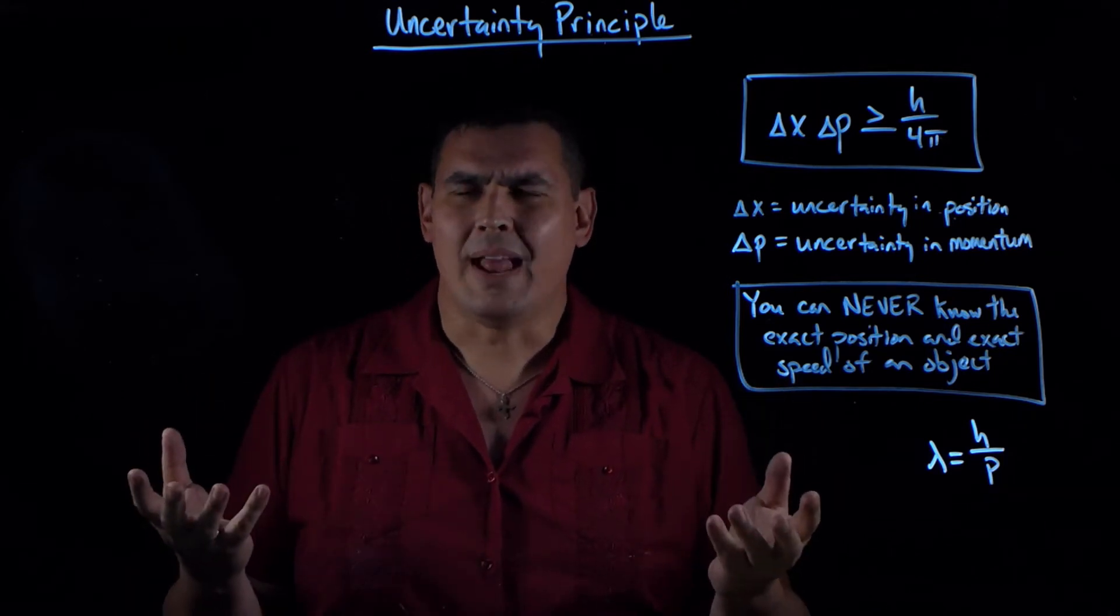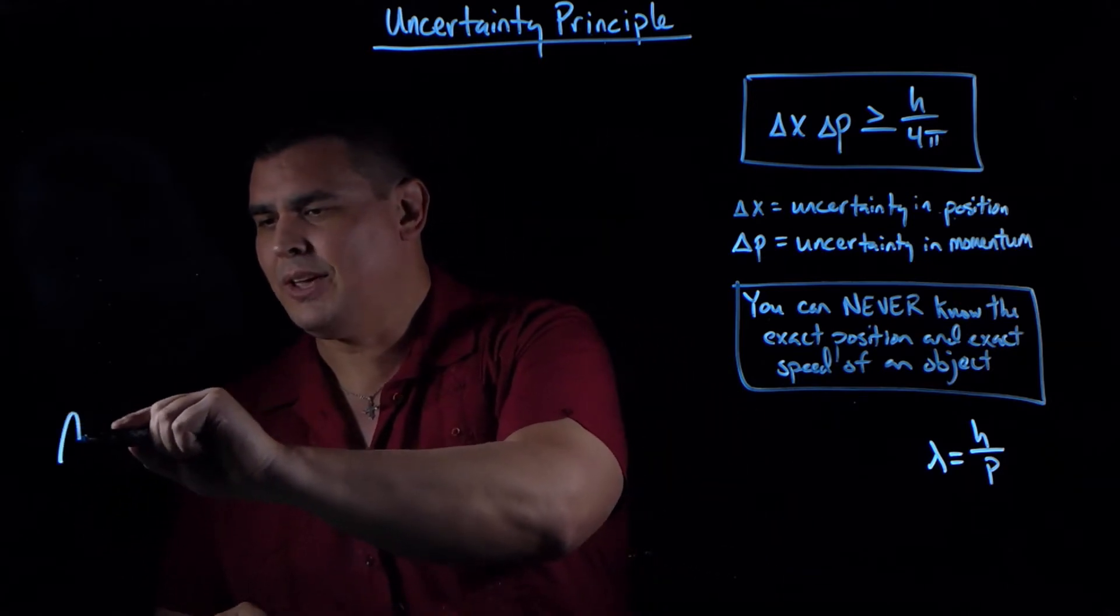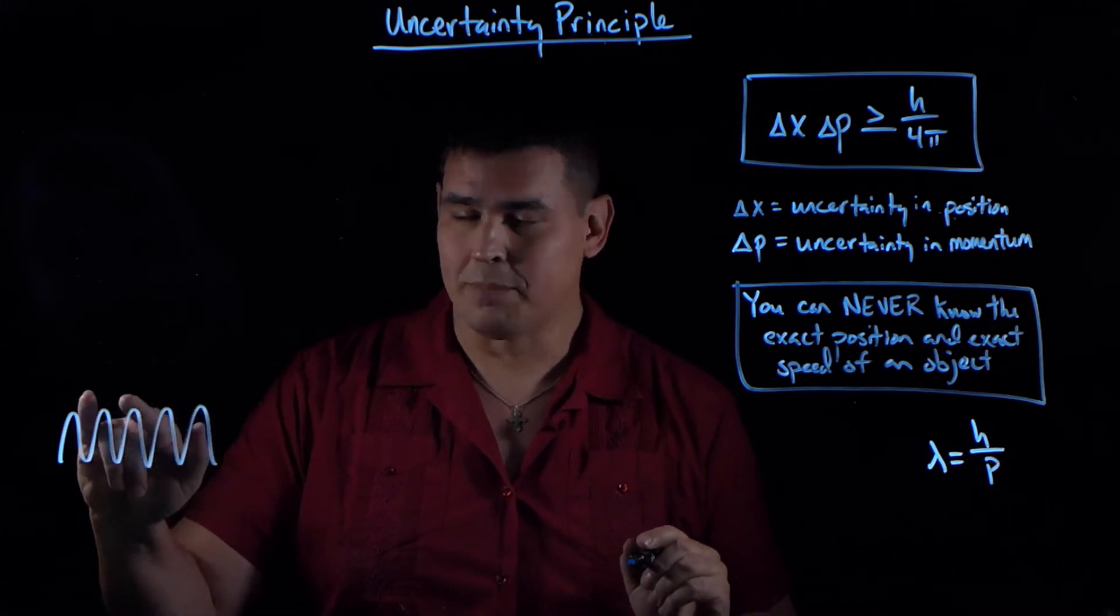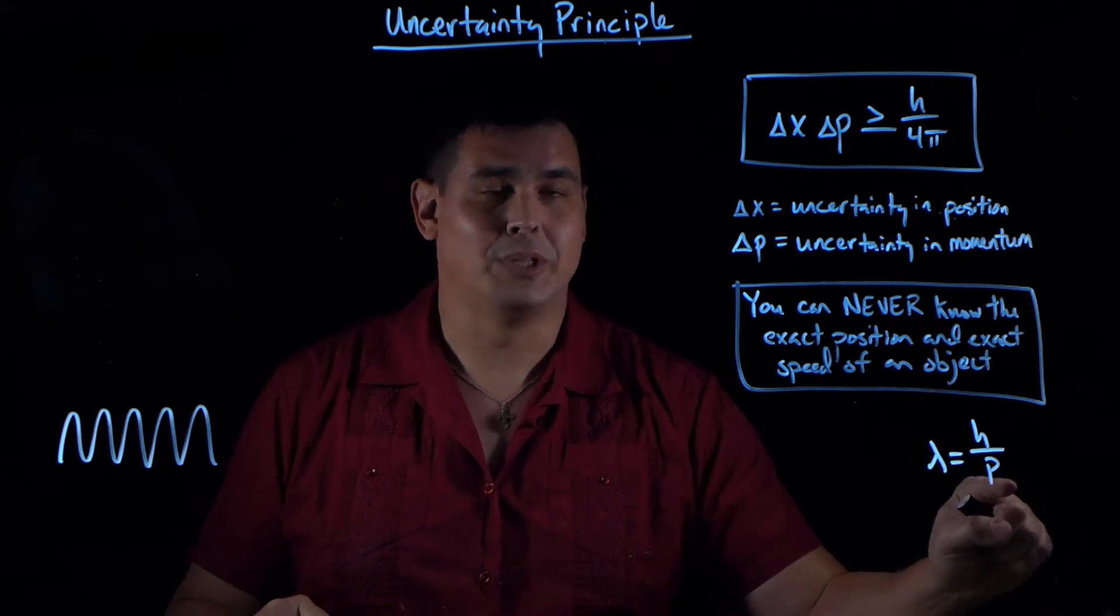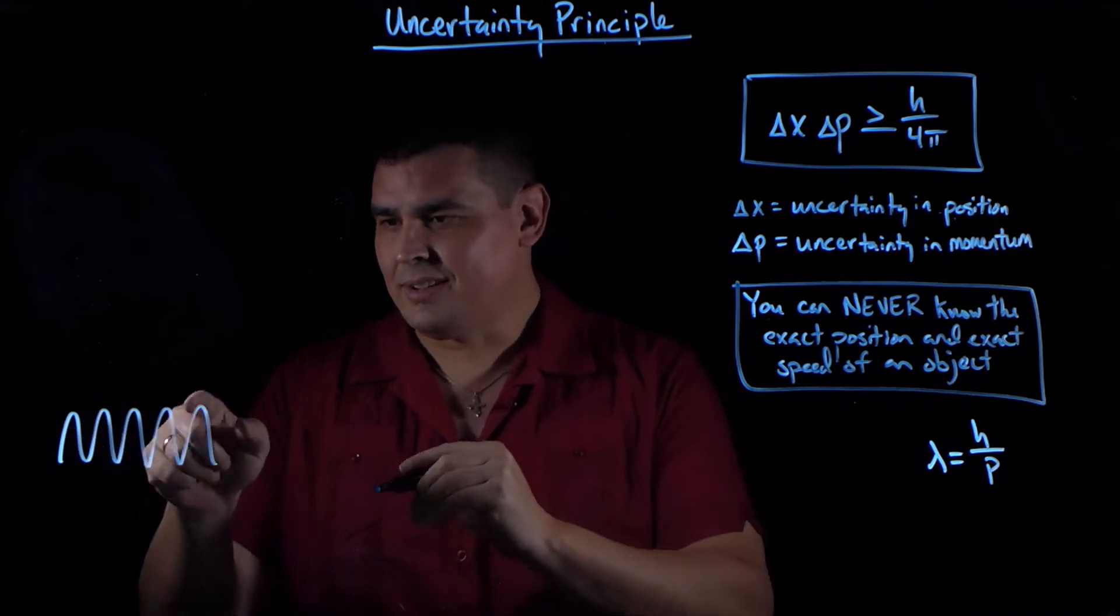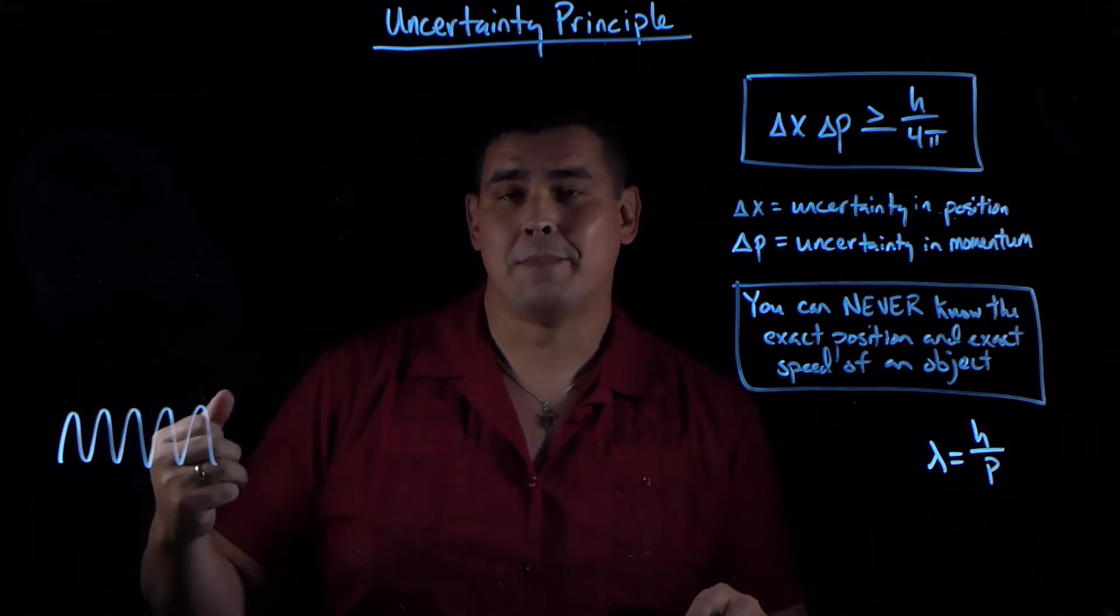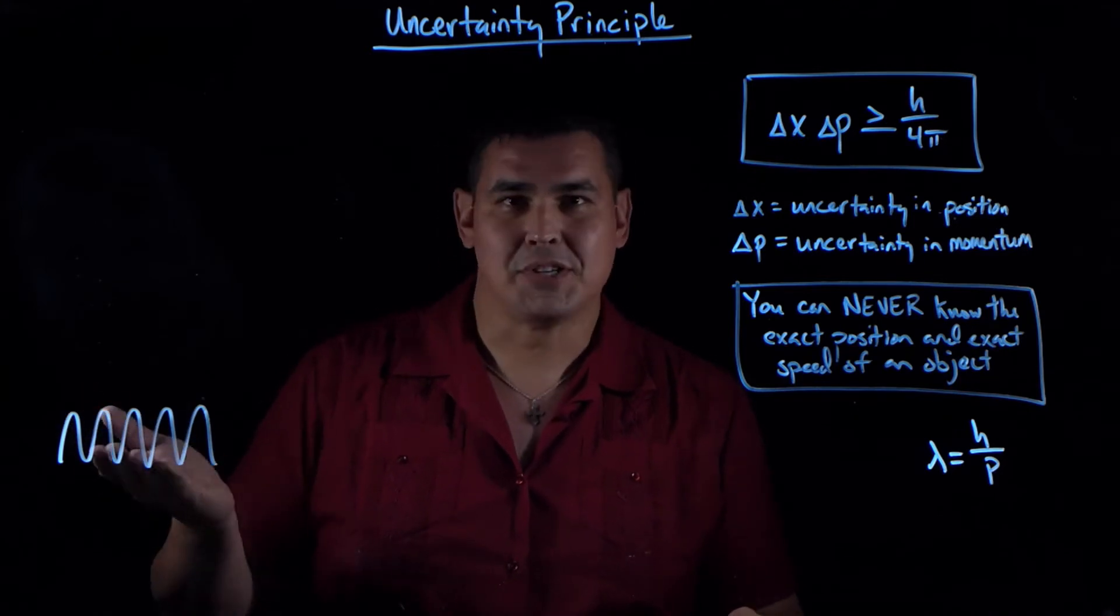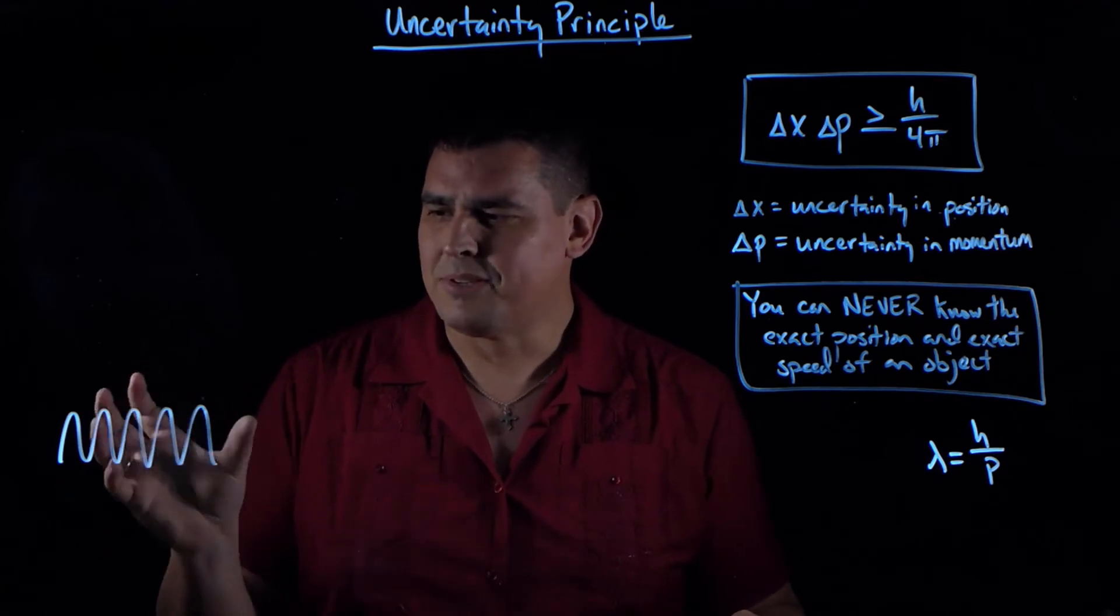So what does that mean? How could something have both particle properties and wave properties? Let's start by looking at a wave. Here's a wave, and this wave has a wavelength. I can look and measure this wavelength. We know from de Broglie's equation that wavelength will tell us momentum. If I ask you to find the wavelength of this equation, that's easy. But if I say find the position of this wave, you're looking like, what the hell does that mean? There is no position for this wave. This wave is everywhere.